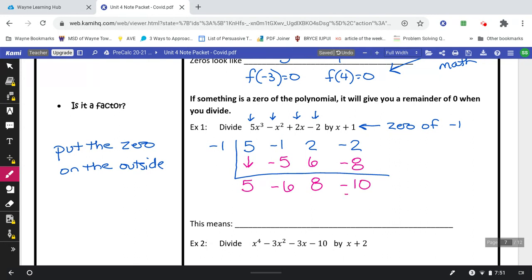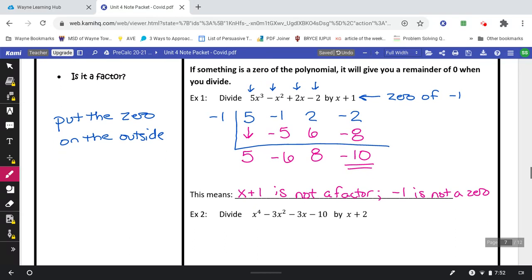Since this negative 10 is not the number 0, this means that x plus 1 is not a factor, which in turn tells you the same thing, that negative 1 is not a zero. Most of the time we want to find the answers. And all this did, since we didn't get a 0 where that negative 10 is, it told us that one of these is not an answer. So ideally, we're looking for things to be 0 at the end.